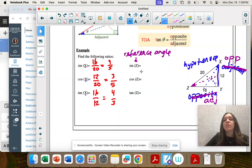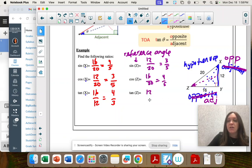So now sine is opposite over hypotenuse. Cosine is adjacent over hypotenuse. And tangent is opposite over adjacent.